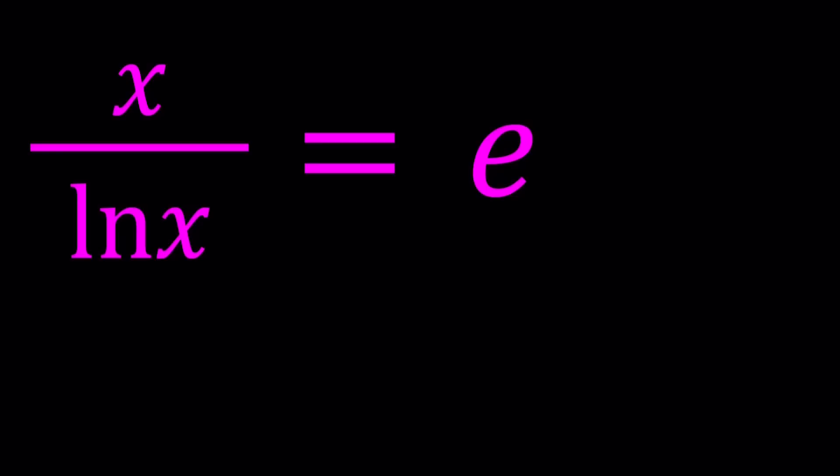At the end we're also going to be taking a look at the graph of this function. There are a lot of ways to approach this problem, and if you think about the reciprocals you can get something like ln x over x equals 1 over e. I can't remember if we did this problem before — if you do know, please let me know.